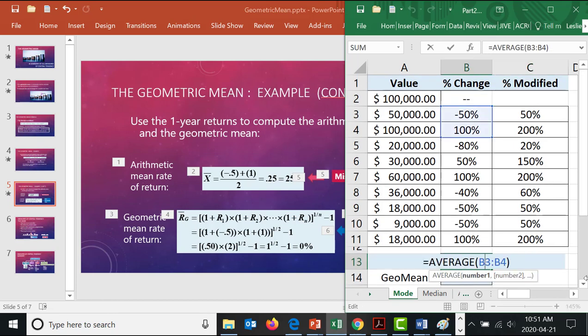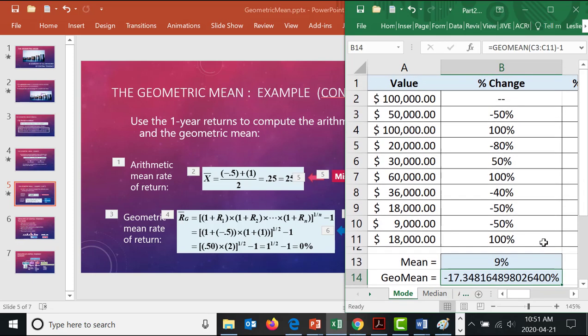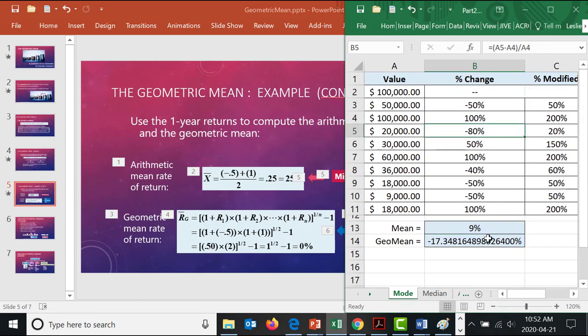But let's make this example a little bit more interesting. Let's just expand our range here to allow for all of these percent changes. Okay, so let's switch our range here to all the way down to C11. So overall average rate of return, if we just used an equals average call, would be 9%. If we use the geometric mean call, we actually have dropped in value down to by 17%.